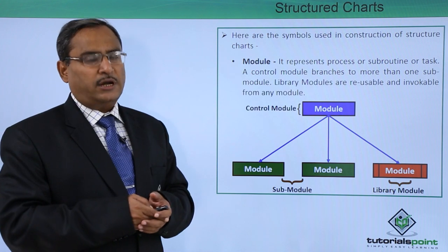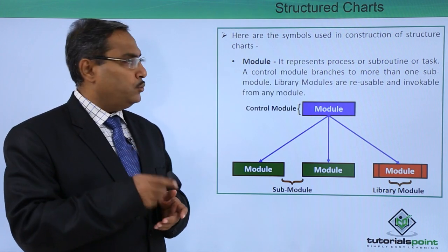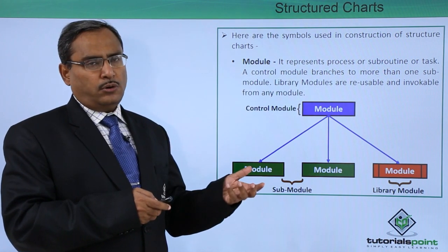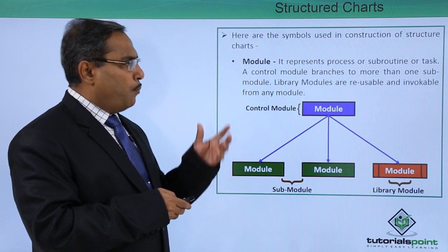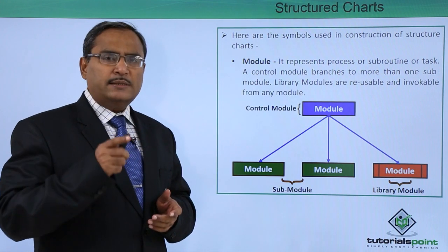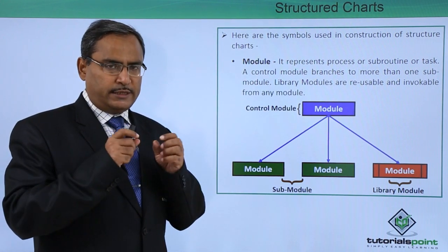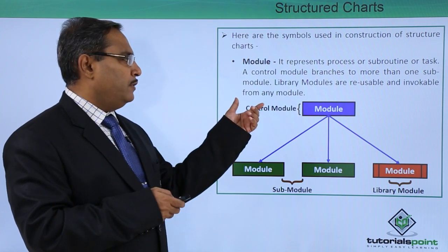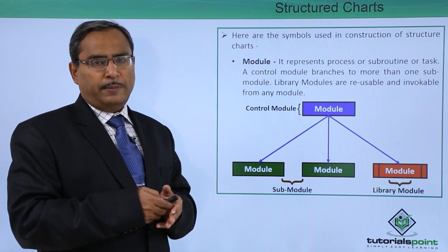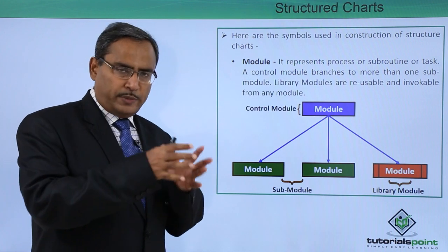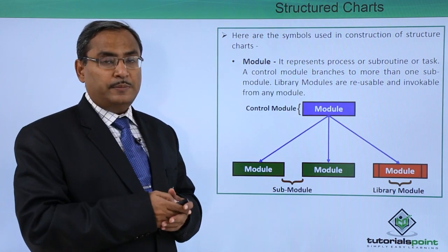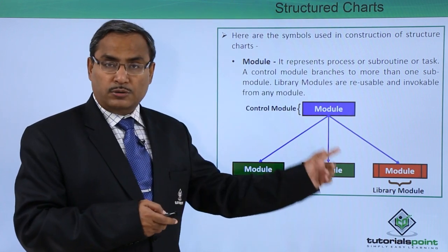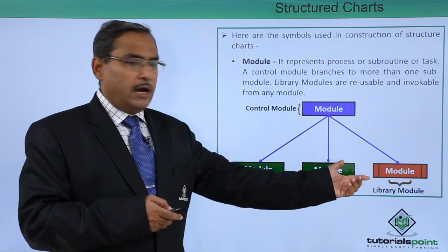Here are the symbols used in the construction of structure charts. First, a module represents a process, subroutine, or a task. A control module branches to more than one sub-module — whenever there are conditional statements, depending upon the condition being true or false, it will have multiple branches. Library modules are reusable and invocable from any module; they contain pre-written function bodies that can be referred to by multiple different modules as required. The control can be transferred from a control module to multiple different sub-modules, and a library module can be shared among them.